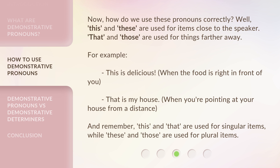For example, 'This is delicious,' when the food is right in front of you. 'That is my house,' when you're pointing at your house from a distance. And remember, 'this' and 'that' are used for singular items, while 'these' and 'those' are used for plural items.